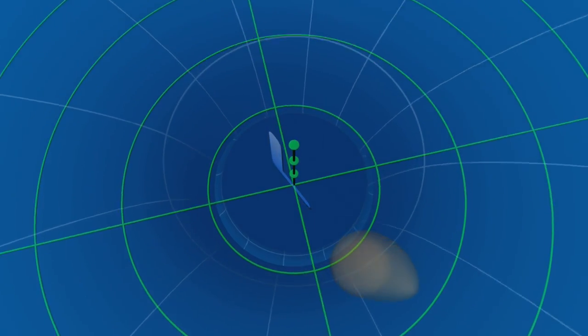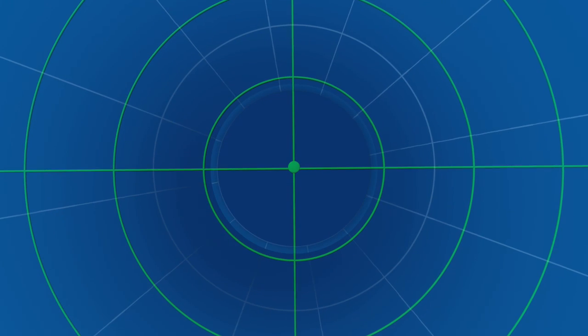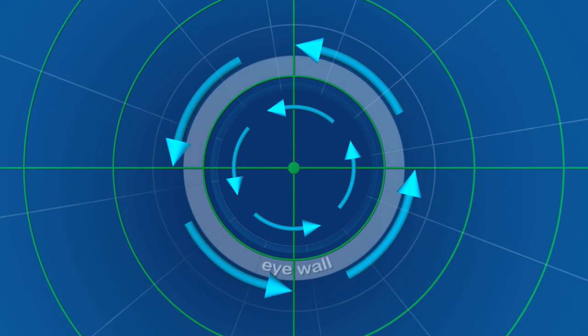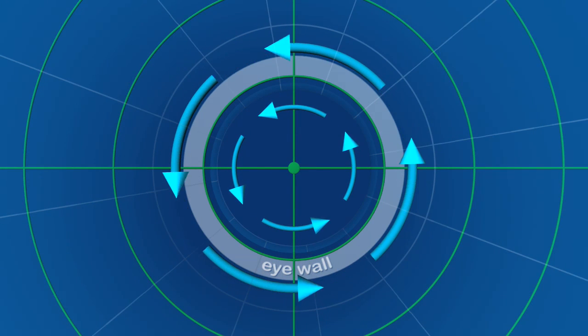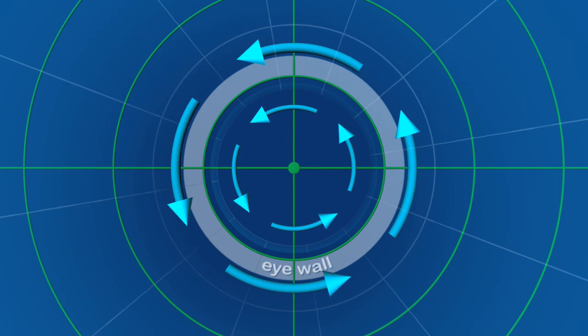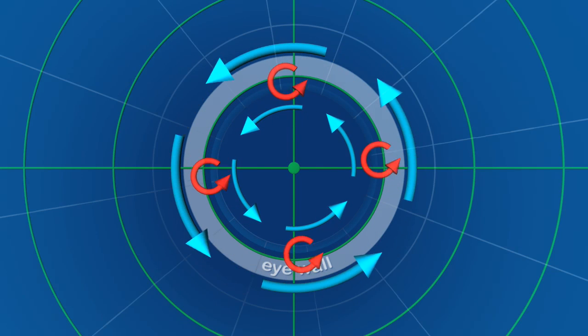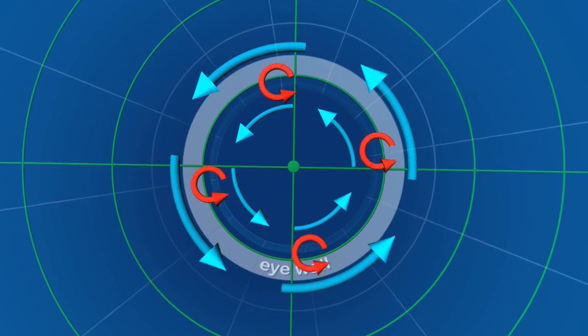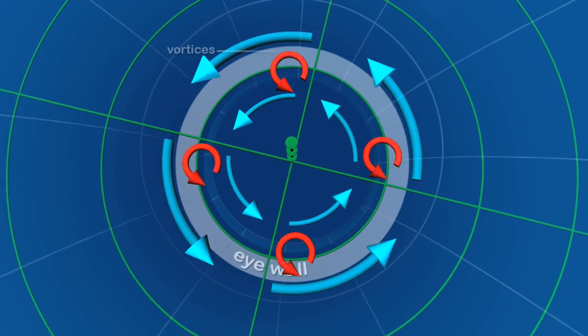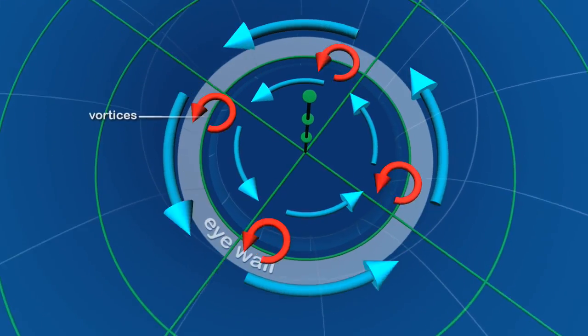What causes these hot towers to form? There's a big difference in wind speeds between the fierce eyewall and the relatively calm winds inside the eye. These rapid changes in wind speeds cause instabilities that can spin up intense vortices just inside the eyewall.